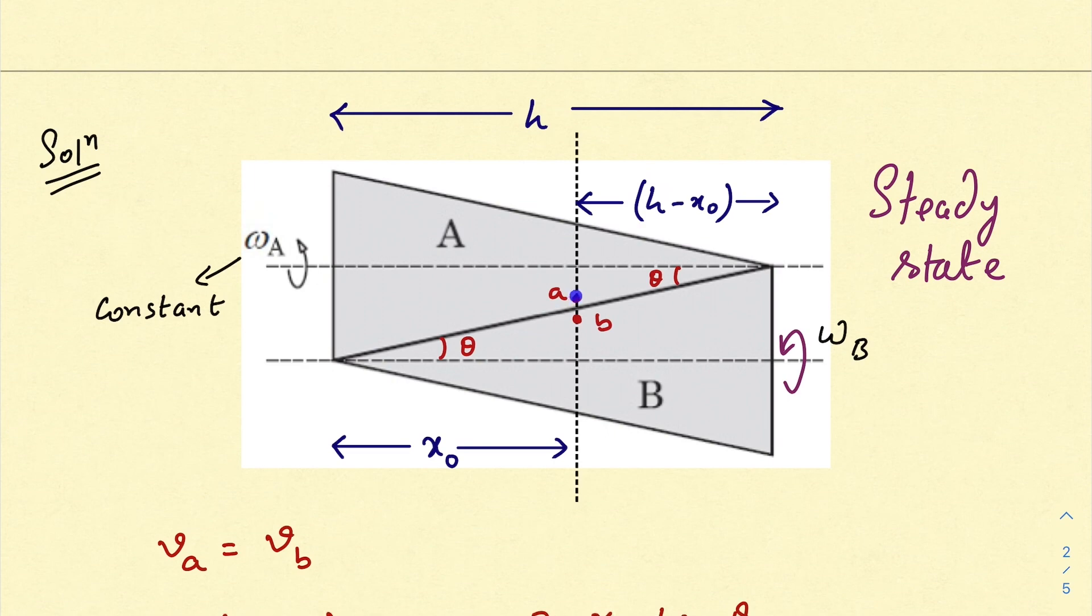So at some point the velocity will match for both the cones, right? Because the velocity is decreasing as we go towards right for cone A, and the same thing is increasing as we go towards right for cone B. So at some point the velocity for both the cones will match.